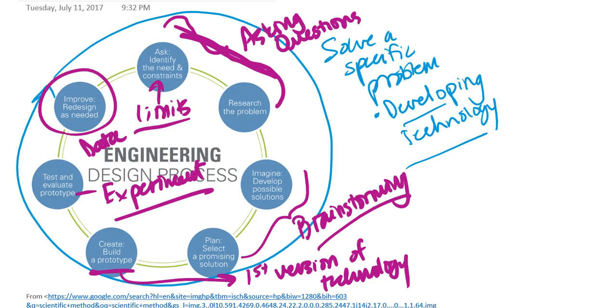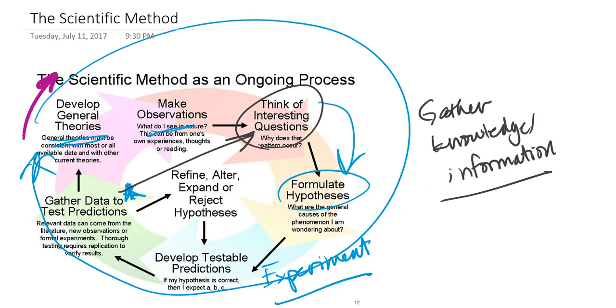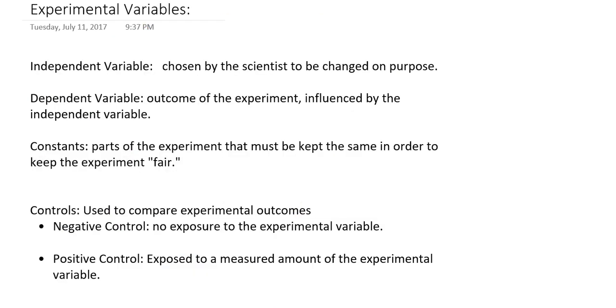Now, in general, engineers will not usually be satisfied with their prototype. Usually they always make improvements and they redesign the technology so that this way they feel that they've met all of the constraints or the limits associated with the project. Now, regardless of whether you're carrying out an experiment to evaluate a prototype in the engineering design process or if you're actually gathering data to test predictions in the scientific method, you're still running an experiment. And that means that you're going to have to design that experiment.